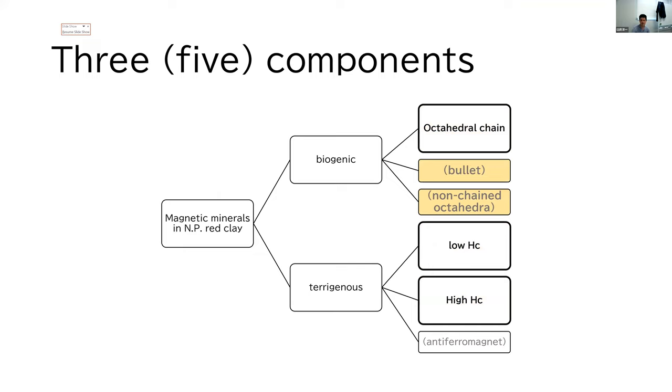But for now, let me move on to some special components, bullet and non-chain octahedral of biogenic magnetite.